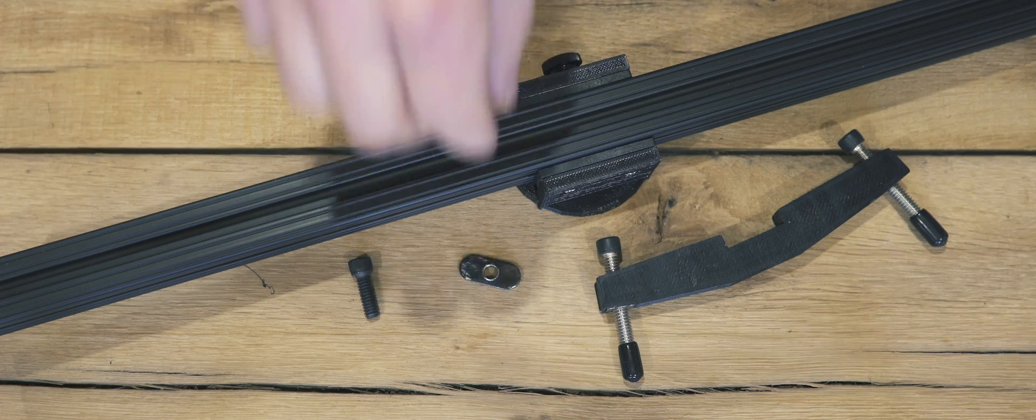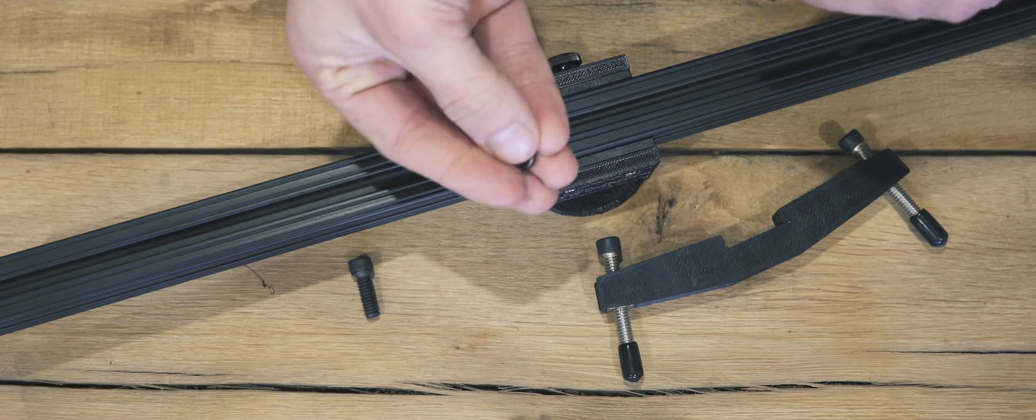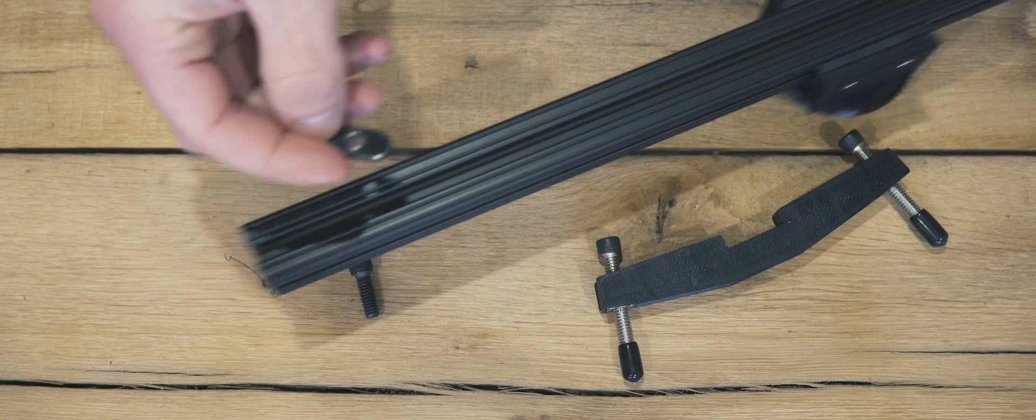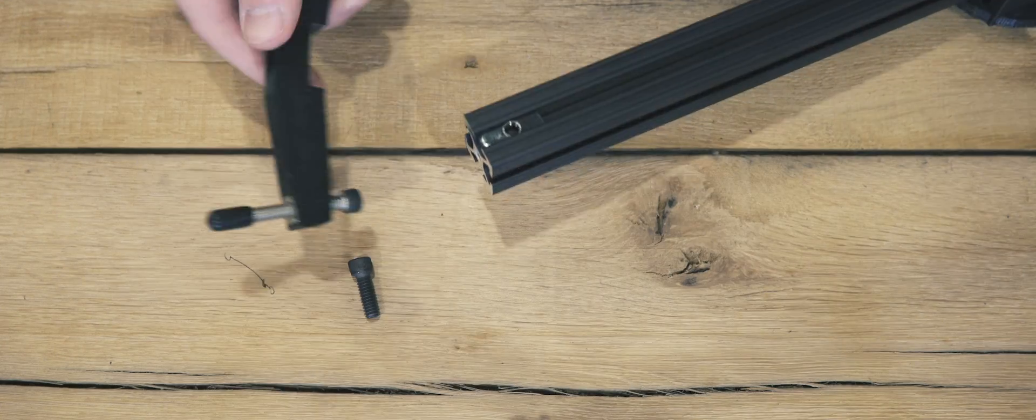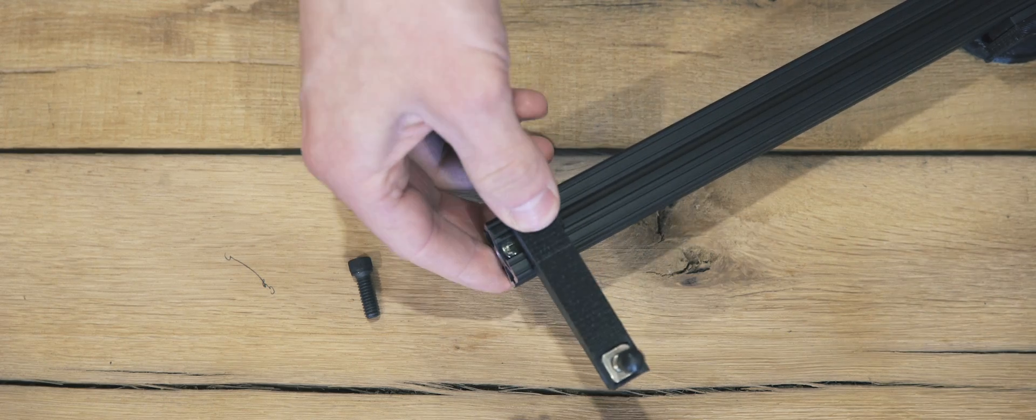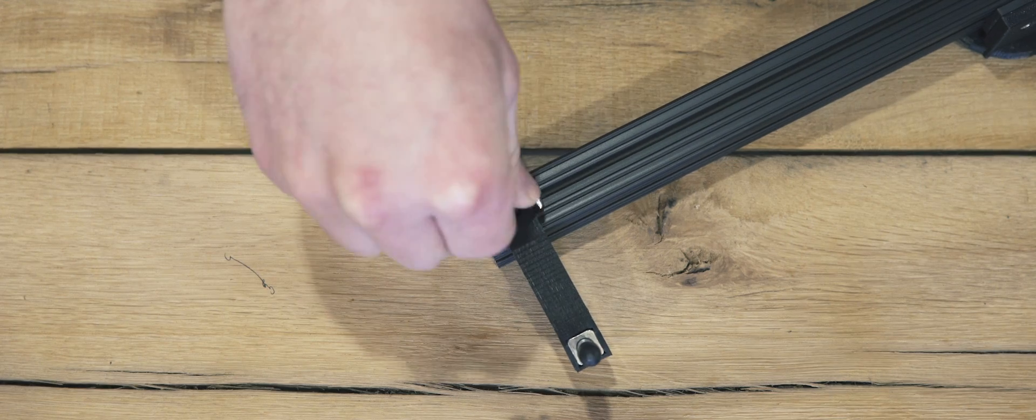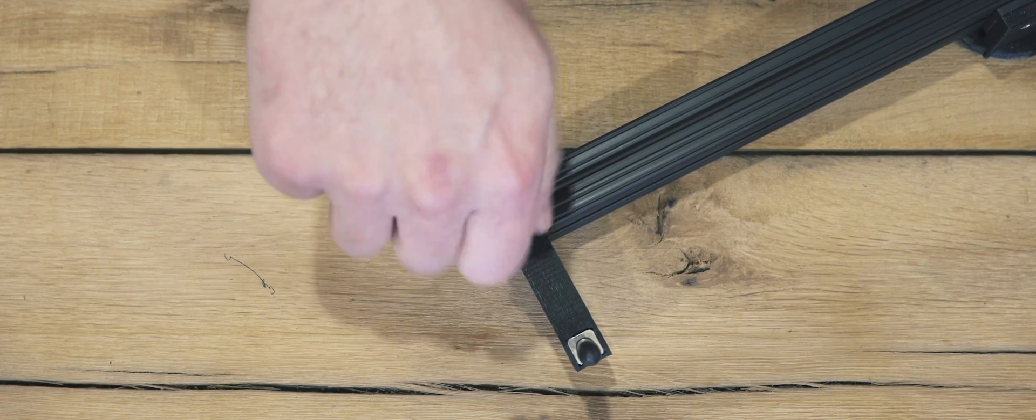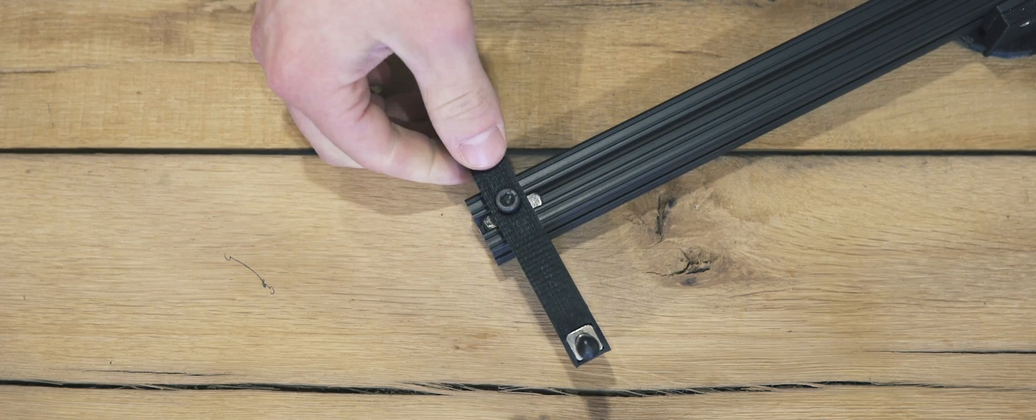Now in order to attach the legs to the rail, you'll need a few of the 8020 T-nuts. Slide the T-nut into the end of the rail, and fasten the leg to it by using a 1/4-20 x 1/4 inch screw. These T-nuts are also what you'll use if you want to attach any other 1/4-20 to your slider, like a quick release plate.